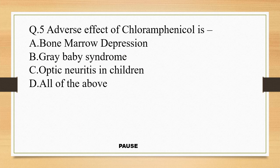Question 5. Adverse effect of chloramphenicol is: option A, bone marrow depression; option B, gray baby syndrome; option C, optic neuritis in children; and option D, all of the above. And the right answer is option D, all of the above. So bone marrow depression, gray baby syndrome, and optic neuritis in children are the adverse effects of chloramphenicol.